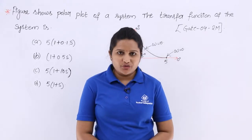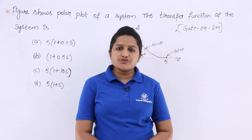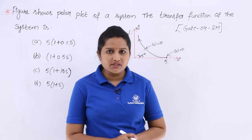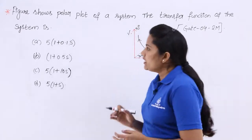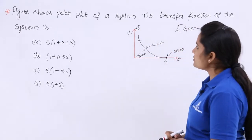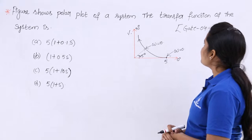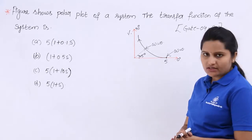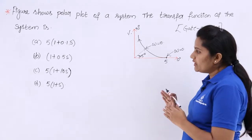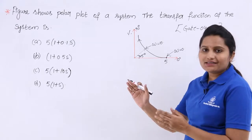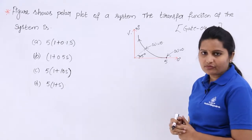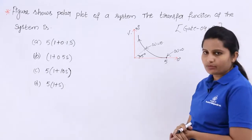In this video we are going to solve one more gate problem related to root locus. This problem figure shows a polar plot of a system, and we need to select the relevant transfer function of the system for this given polar plot.